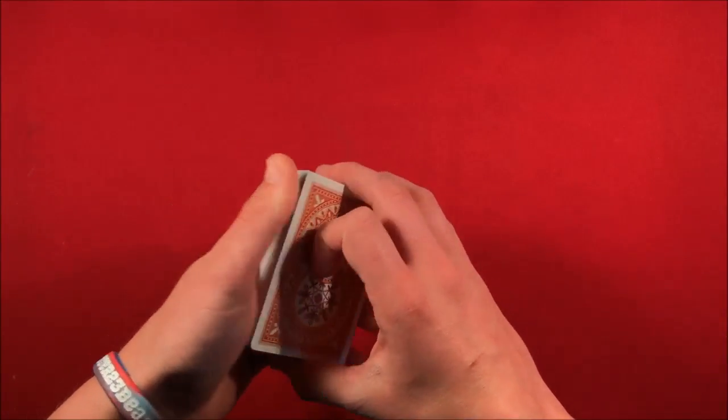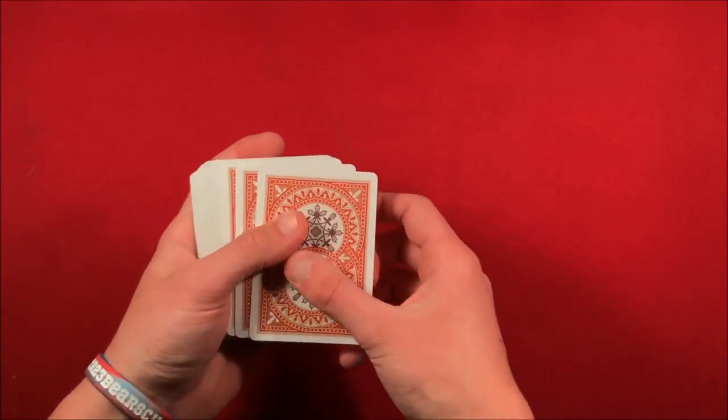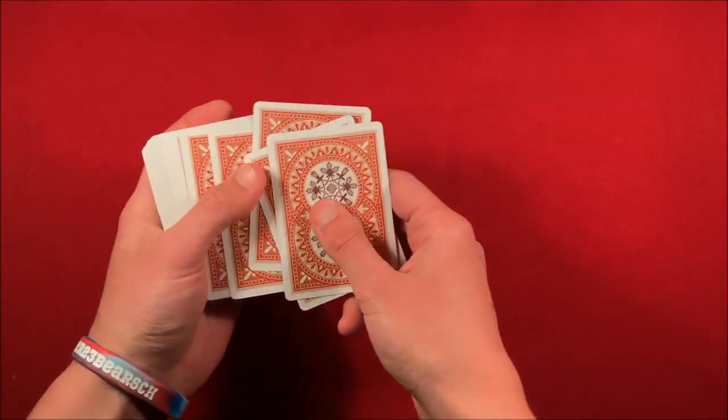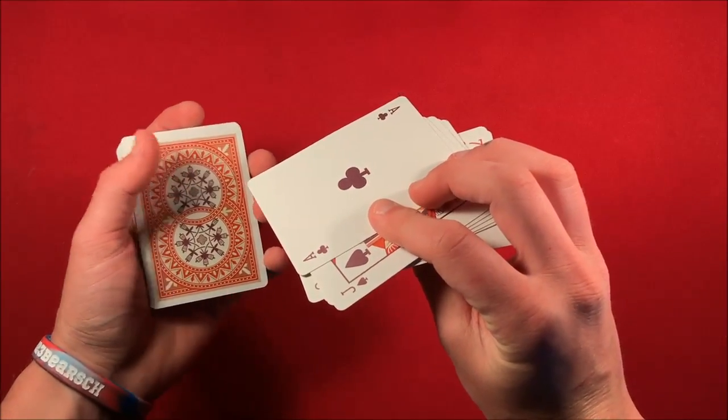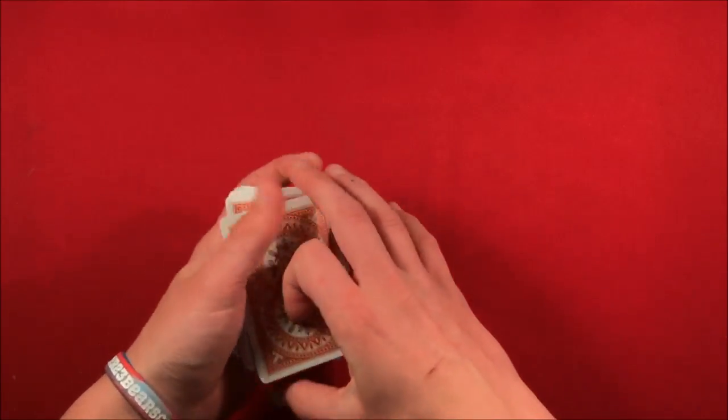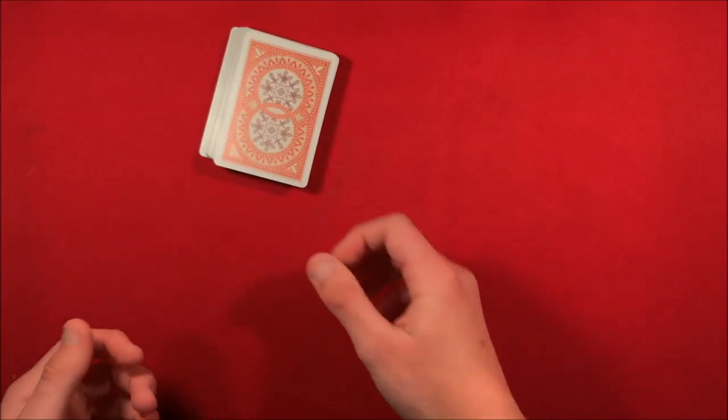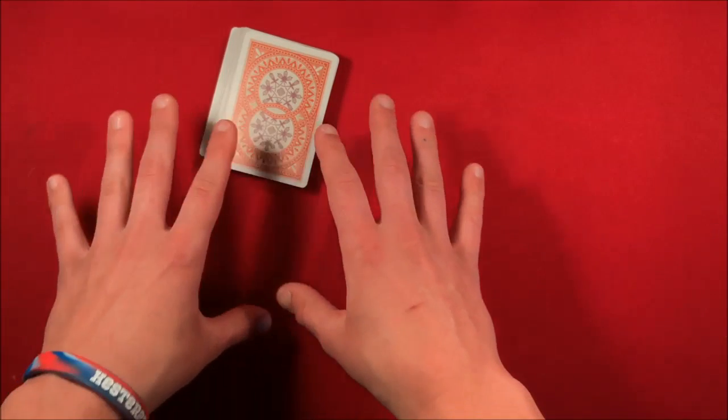But really what you just did by counting out those eight cards yourself is putting their card one, two, three, four, five, six, seven, eight cards below. So that's what you did. You just set it up yourself when you showed the spectator. You give the deck to them. Like I said, you could give the deck a false cut.